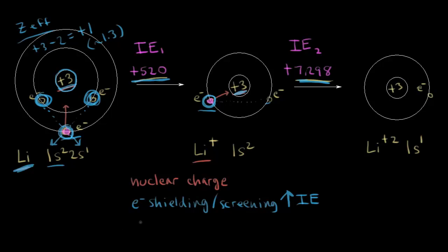The last factor is distance — the distance of those electrons from the nucleus. For the neutral lithium atom, the outer electron is in the second energy level, so it's further away. For the lithium +1 cation, the electron to be removed is in the first energy level, in the 1s orbital, so the distance is smaller. By Coulomb's law, the smaller distance means a greater attractive force from the nucleus, and therefore it takes more energy to pull that electron away. This is another reason why the second ionization energy is so much larger than the first.